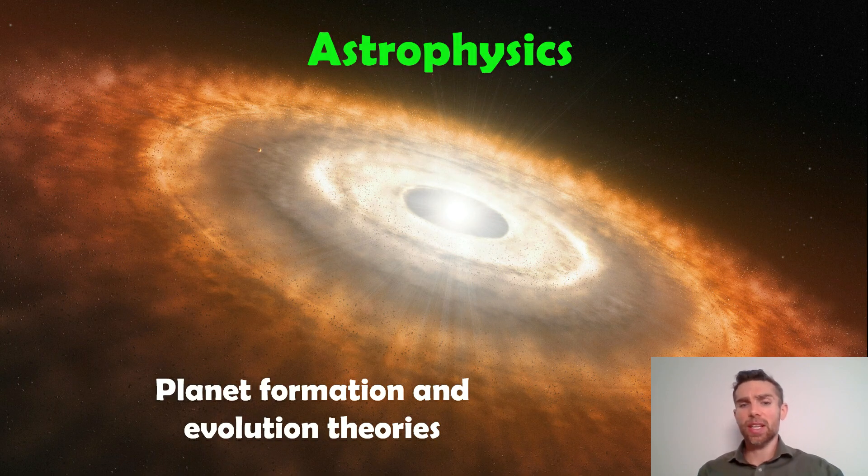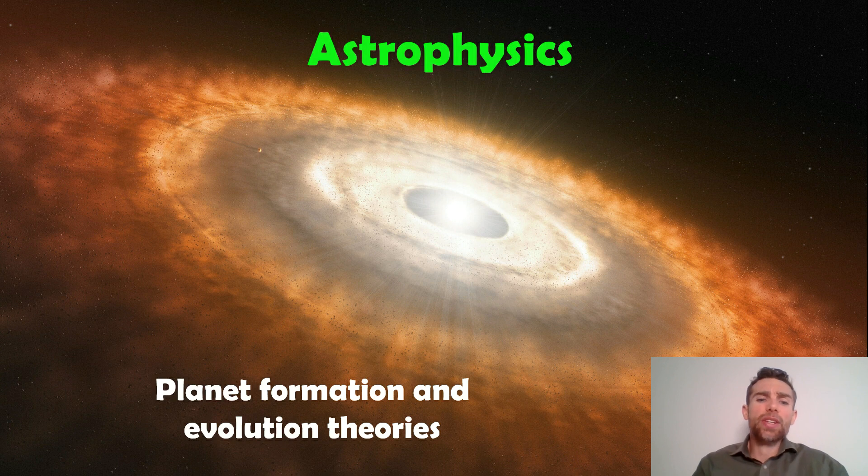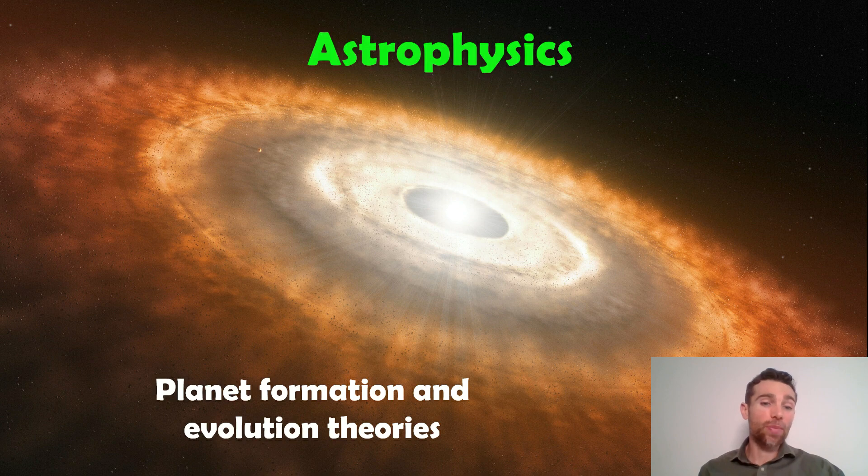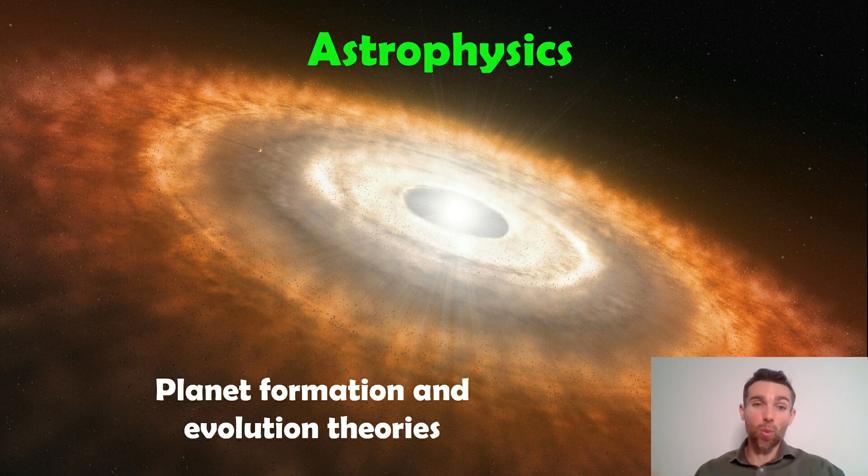So sort of things you're going to do in astrophysics then, you're going to learn about planet formation and evolution theories. So instead of just observing them, we might have a particular population. For example, Earth-like planets are quite rare. Why are they rare? But we need to understand how planets form and how they evolve. So we need to make our theories and try and explain what we actually see.